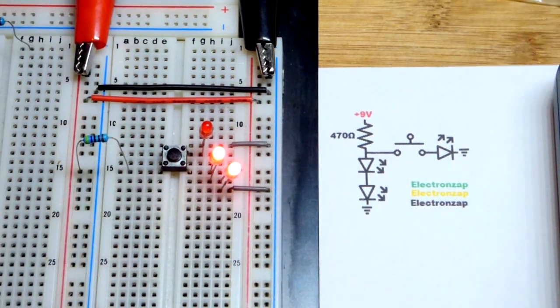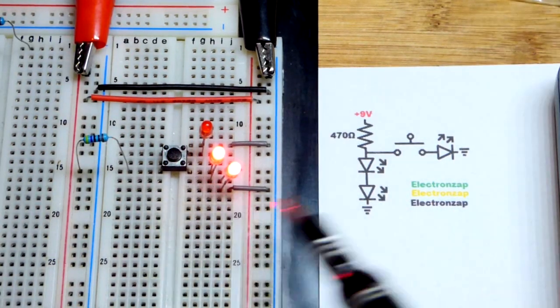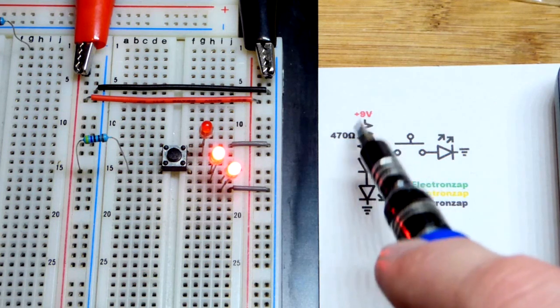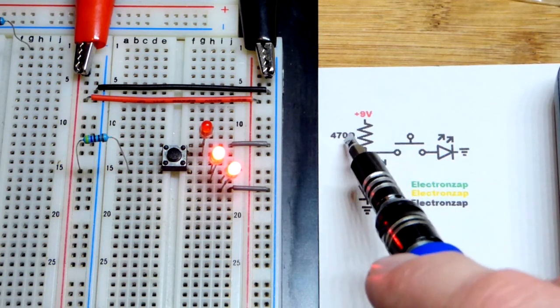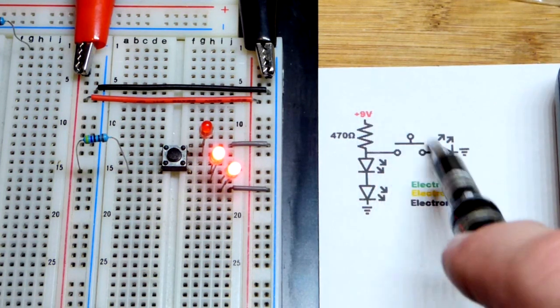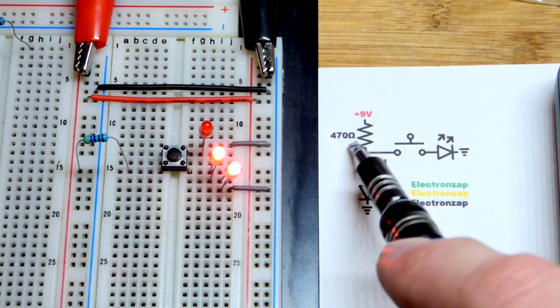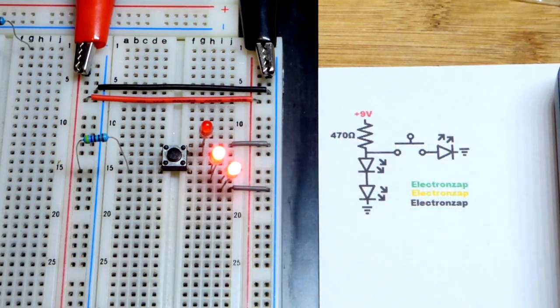This switch is kind of coming loose. Plus if I bump the power supply it might cut power a little bit. But in any case 470 ohms is a good minimum resistance when you're using 9 volts to protect an LED. You can go higher. The LEDs just won't be as bright.